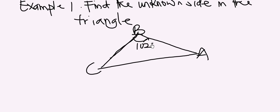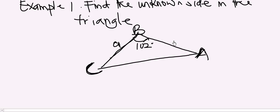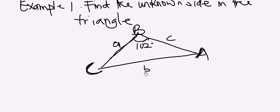The side opposite angle A is small letter a. The side opposite angle C is small letter c. The side opposite angle B is small letter b. Two of these sides are given: c is 3 cm and a is 5 cm.